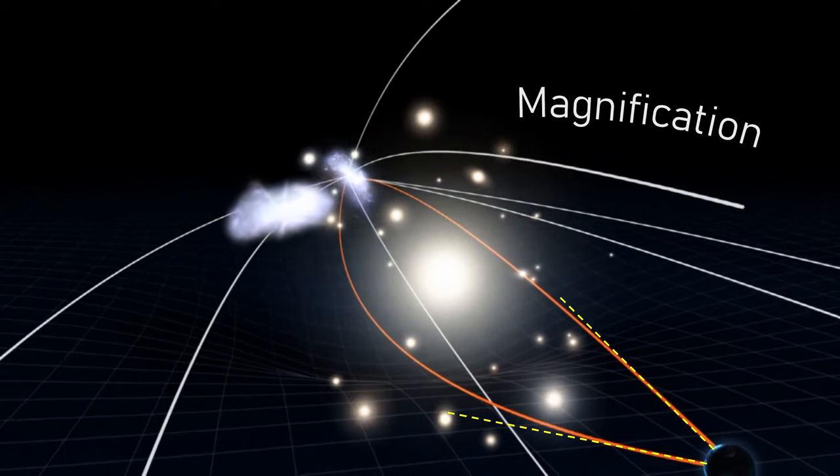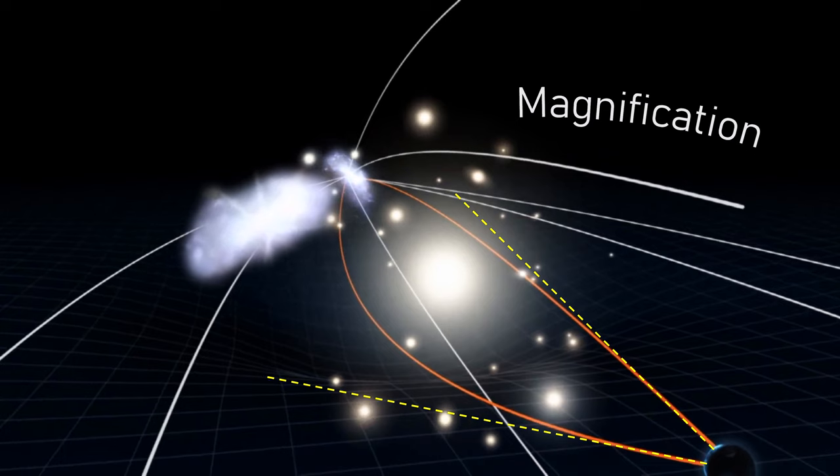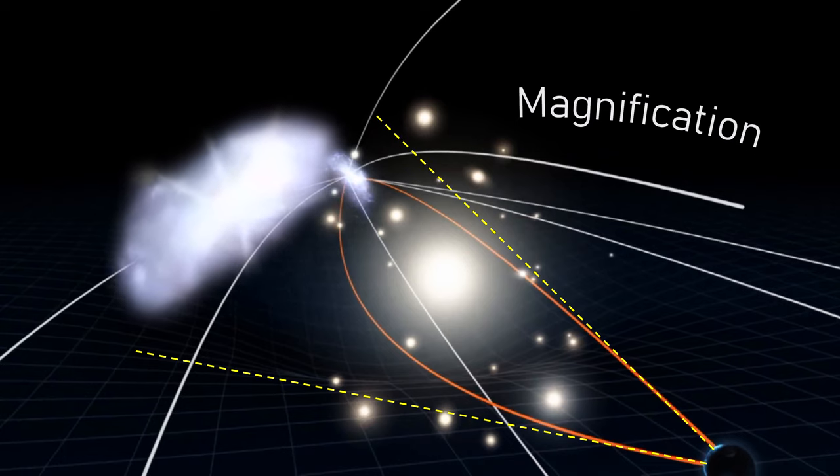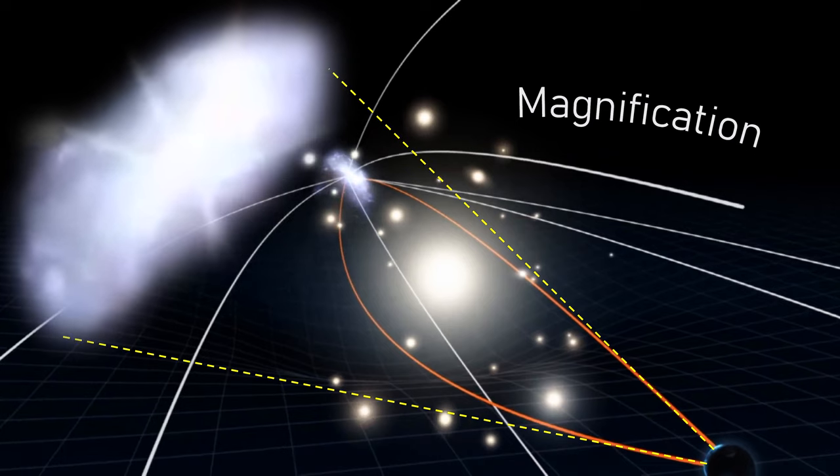The amount of bending depends entirely on the structure of the lensing cluster. Magnifications can range from a factor of 2 to 40 times the size of the distant object.